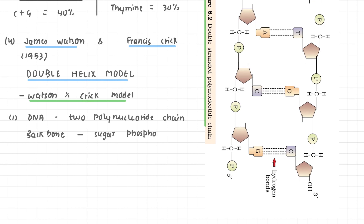The backbone can be ribose sugar as in RNA, or deoxyribose sugar as in DNA — we discussed pentose sugars, ribose and deoxyribose, in a previous lecture. The sugar-phosphate forms the outer backbone, while the nitrogen bases project inward. In the two polynucleotide chains, the nitrogen bases face inward and form base pairs.